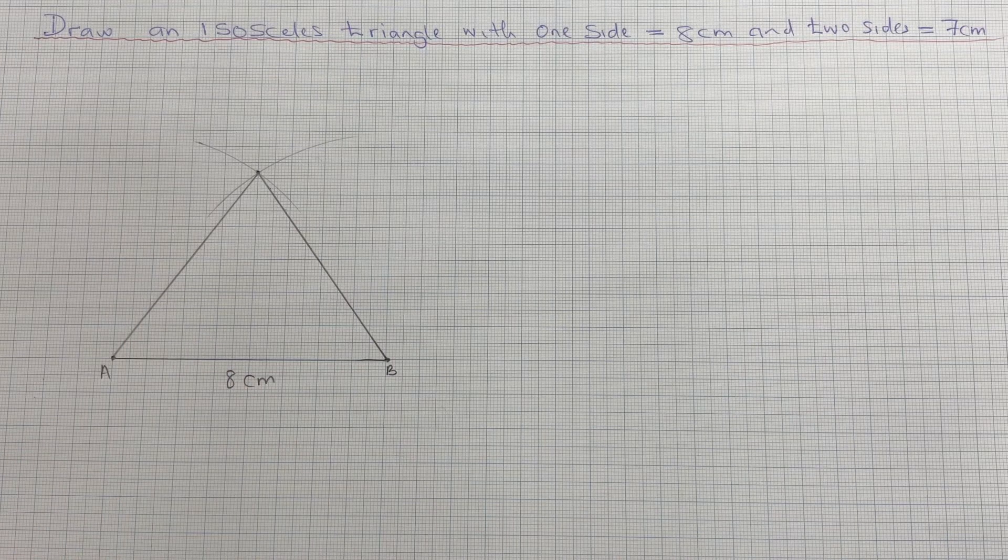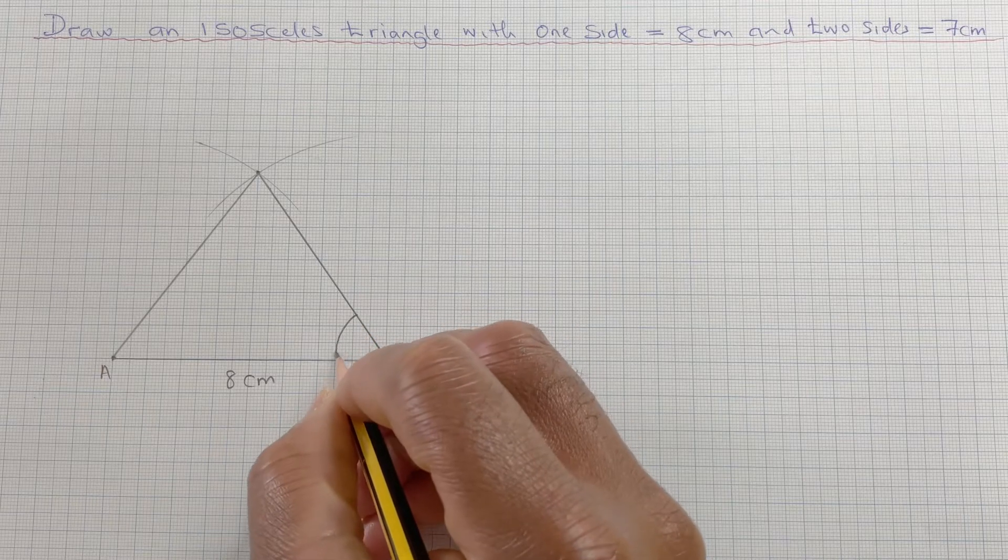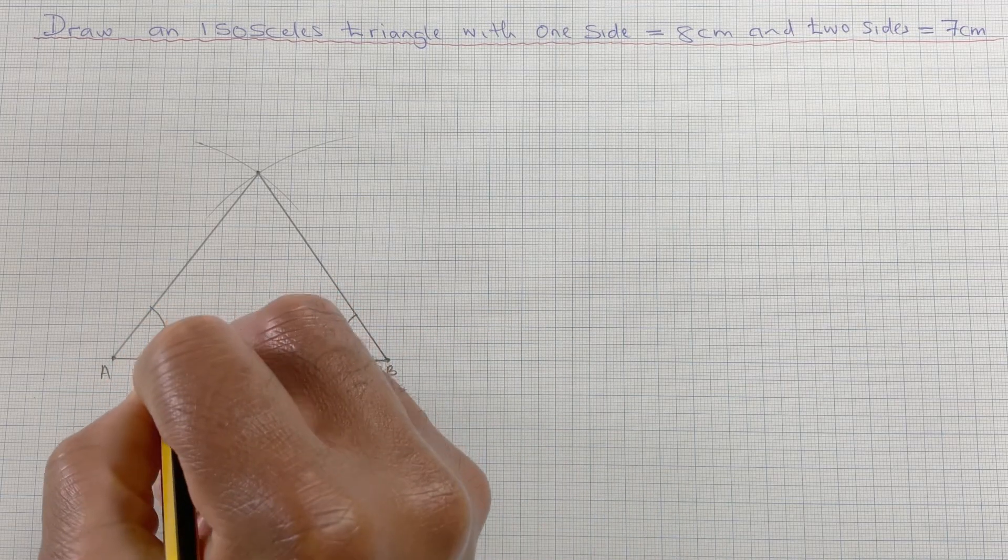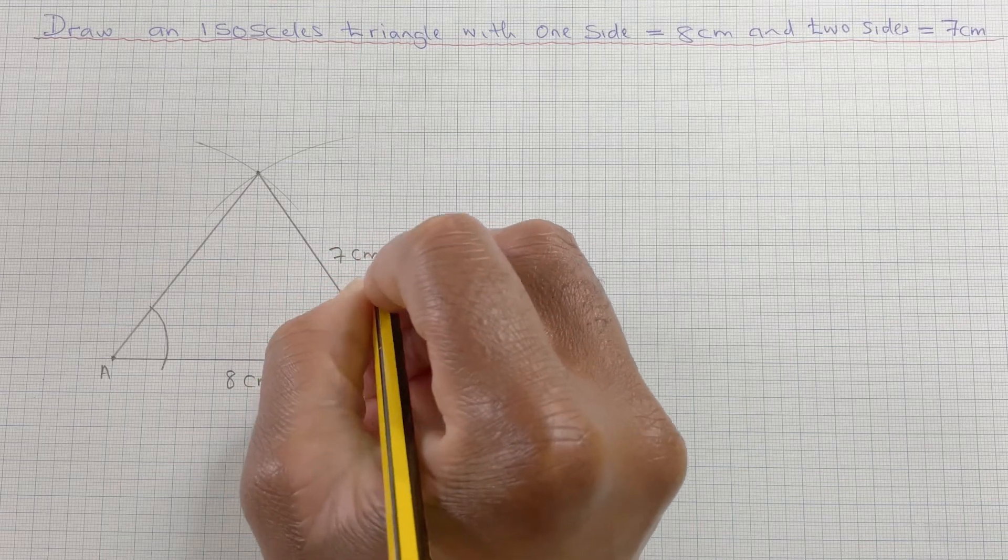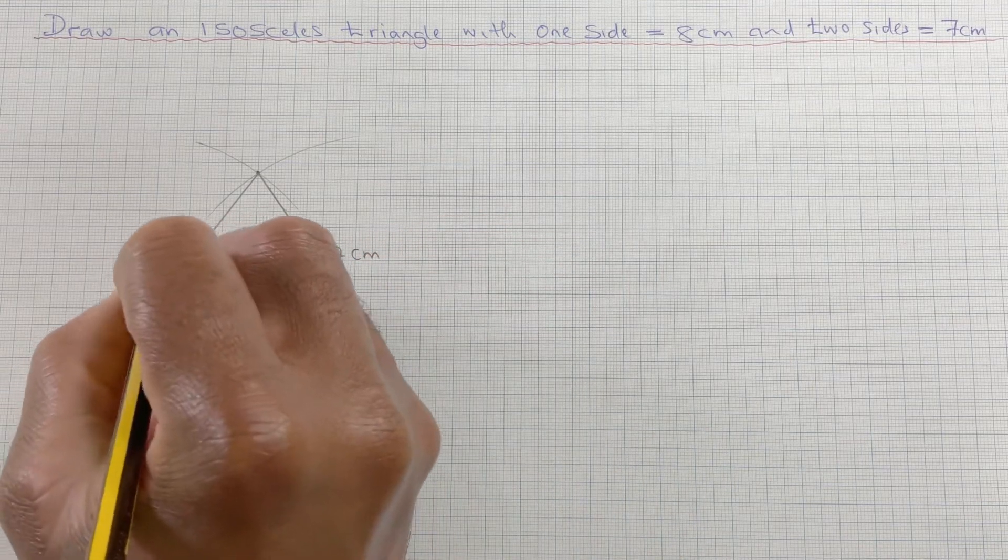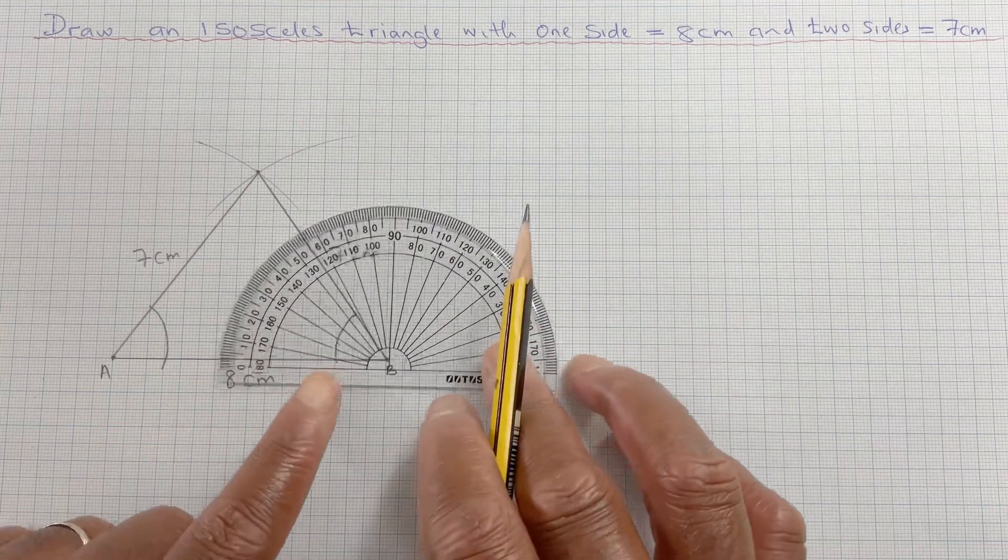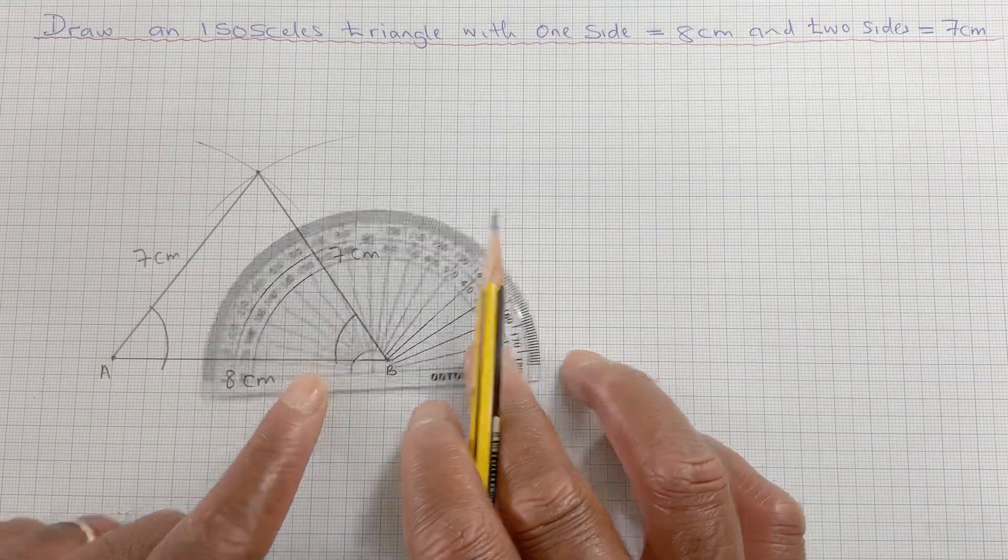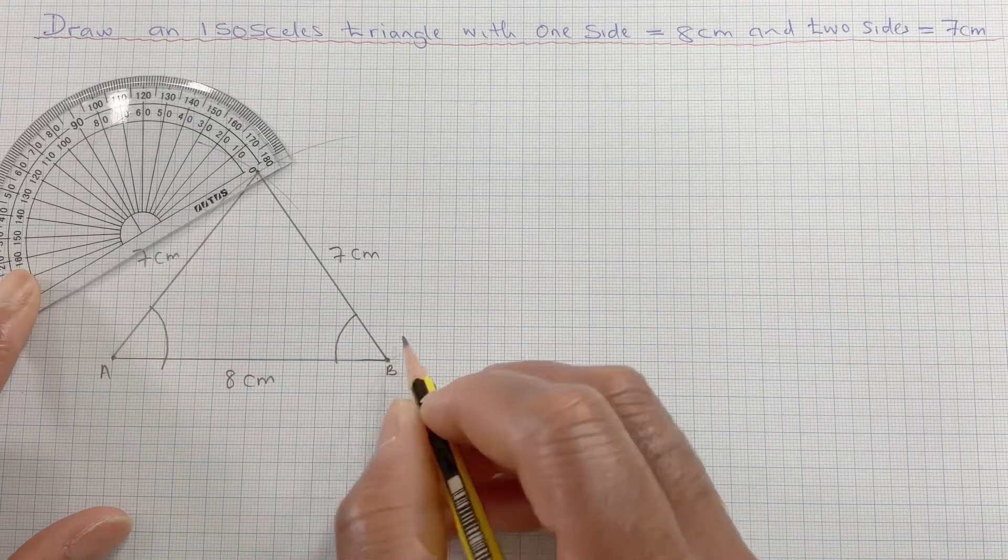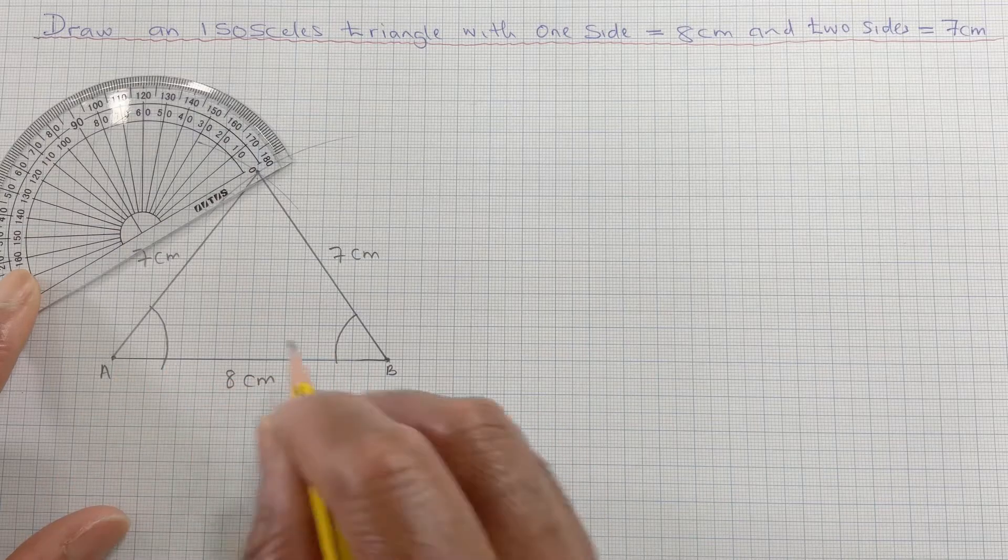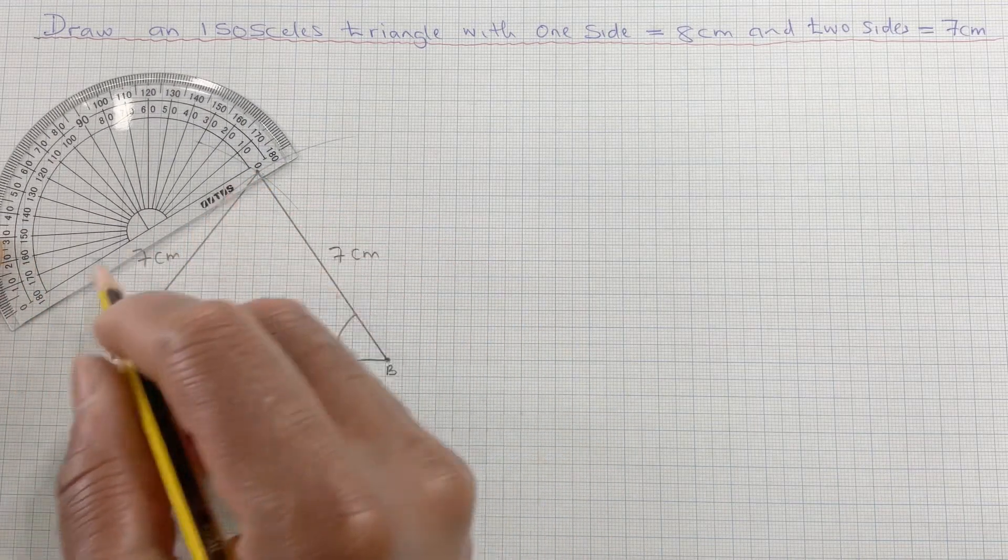We could check to see if this angle here is equal to that angle. Remember, the side is 7 cm and 7 cm. To check the angle, I could use my protractor. If I get the centre of the protractor to be on this point here, and the line here, AB, will lie on the line of 0 on the protractor.